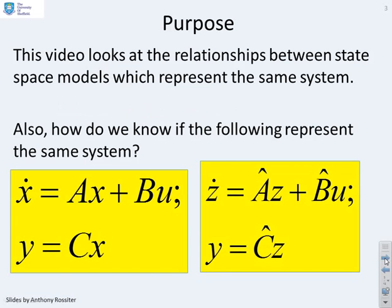Here's an example. I've given you two different models: x dot equals Ax plus Bu, y equals Cx, and z dot equals A hat z plus B hat u, y equals C hat z. Do these represent the same system? Do they represent different systems? How do I know?